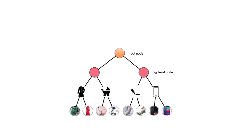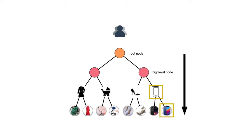Actually, hierarchical structure of information ubiquitously exists in many domains. For example, iPhone is the fine-grained item while smartphone is the coarse-grained concept to which iPhone belongs. By leveraging such hierarchical information, we propose a novel tree-based deep model for large-scale recommendation by hierarchical retrieval.